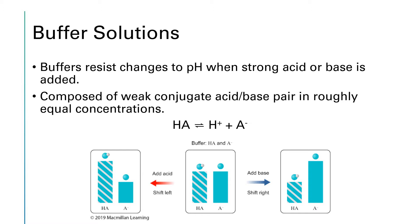If you have a buffer solution and you add an acid to it, that's like you're adding H+ ions, and so the H+ ions can react with the conjugate base — the A- ions — and this reaction can go in the reverse direction. The conjugate base form present in the buffer will react with those added H+ ions. A- plus H+ will give us HA, the molecular form. You'll see that the concentration of A-, the conjugate base, has fallen, and the concentration of HA has increased.